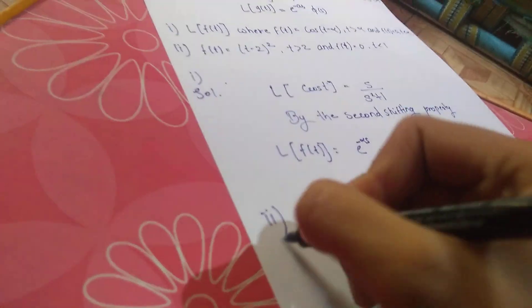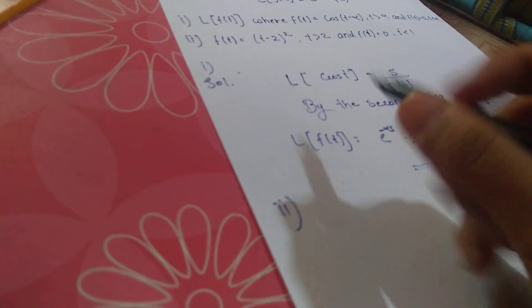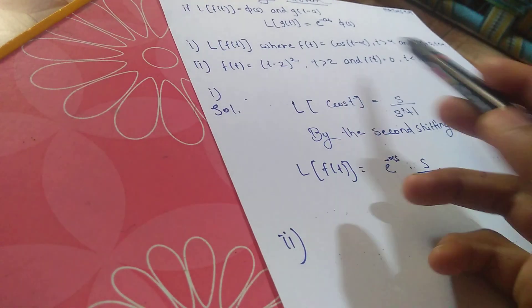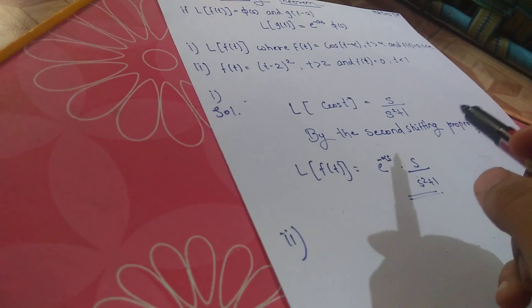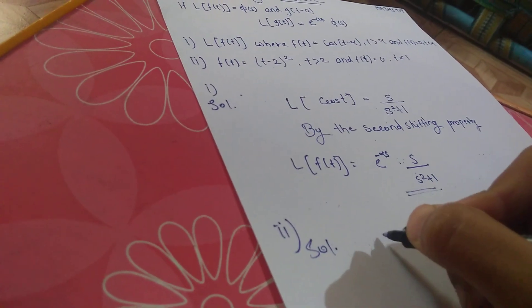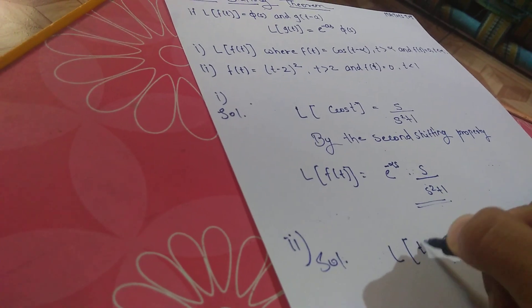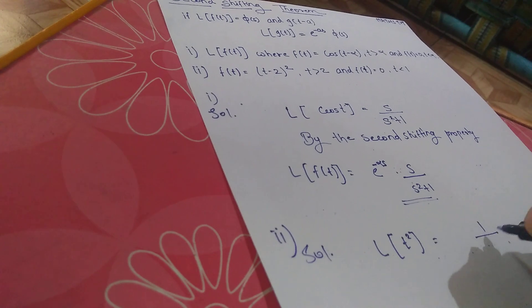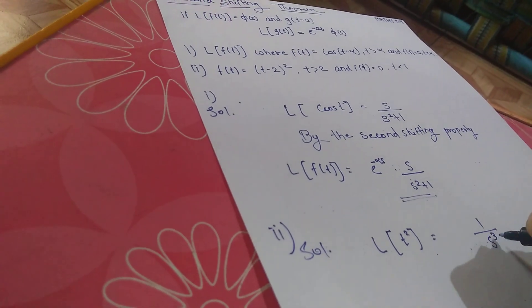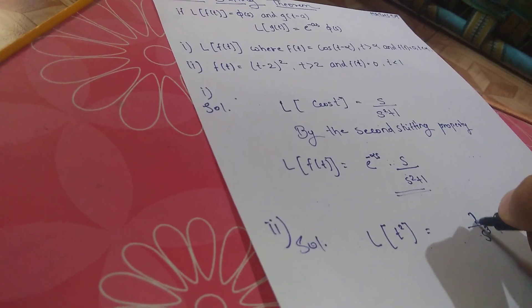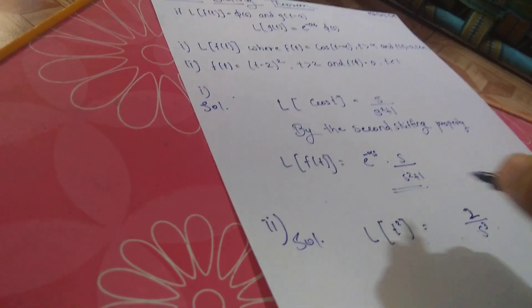That's my final answer. Now start with the second. Here f(t) = (t-2)^2 when t is greater than 2, or f(t) = 0 when t is less than 1. So what will be the Laplace of t^2? That is 2/s^3, where n is 2.